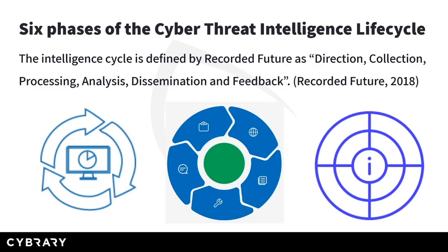Just as most working units in an organization, cyberthreat intelligence has a specific life cycle. The intelligence cycle is defined by Recorded Future as direction, collection, processing, analysis, dissemination, and feedback. This is the classic flow of cyberthreat intelligence. This flow ensures that CTI activities are aligned with the organization's objectives and can provide information with the required meaning, keeping all objectives in constant improvement.